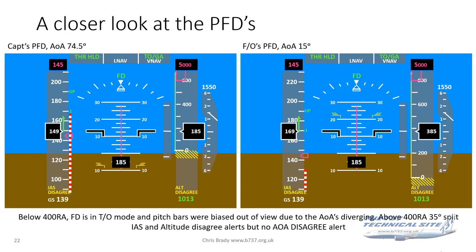When the AOAs start to diverge, that is sensed by the flight director system, and while the divergence is happening they will be biased out of view. Above 400 feet, the mode changes from takeoff mode to climb mode. The system resets and there's no longer any divergence — they are different, but the difference is the same. So the pitch bars of the flight directors come back into view above 400 feet radio altitude, albeit with a 35-degree split. Notice also the difference in airspeed and altitude indications — hence the airspeed and altitude disagree alerts.